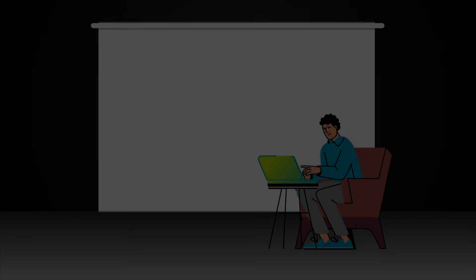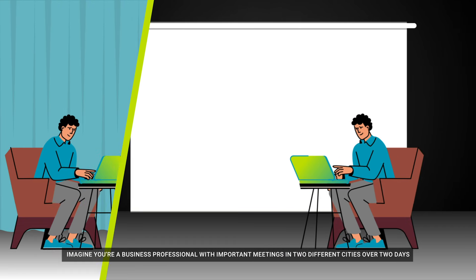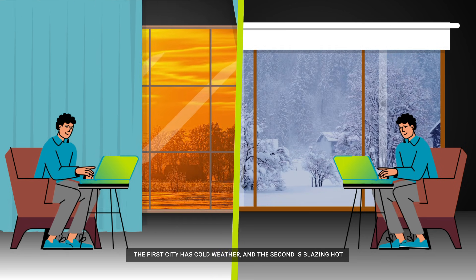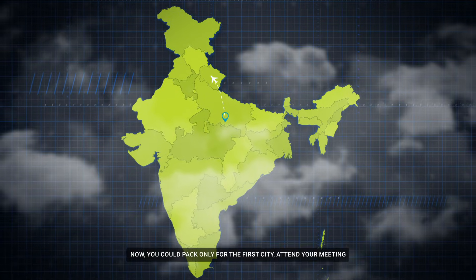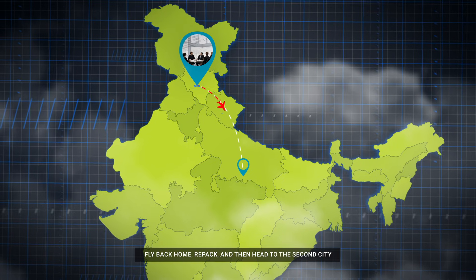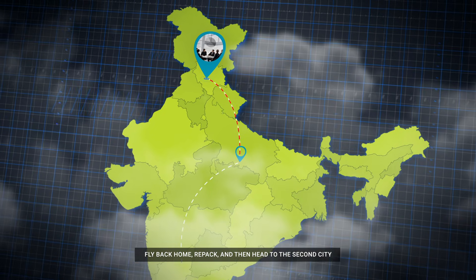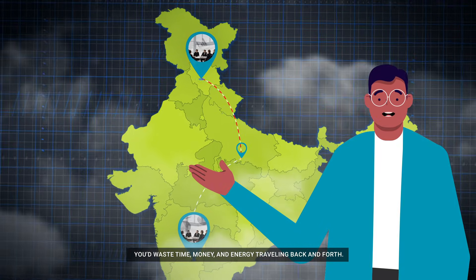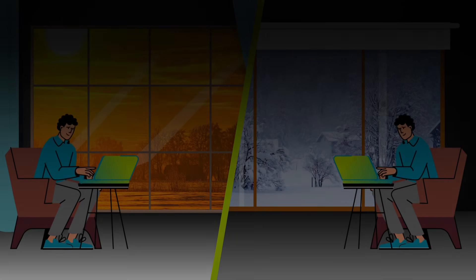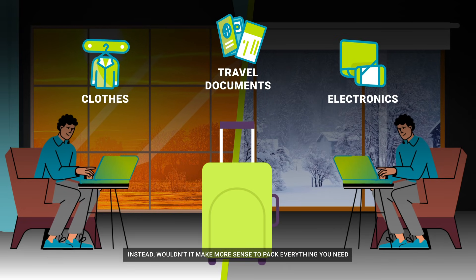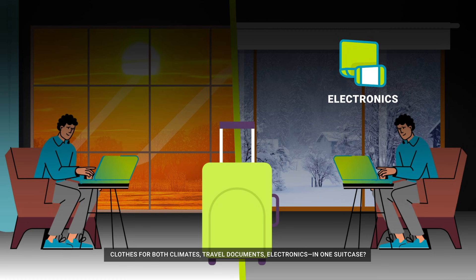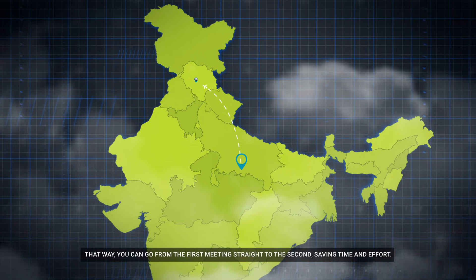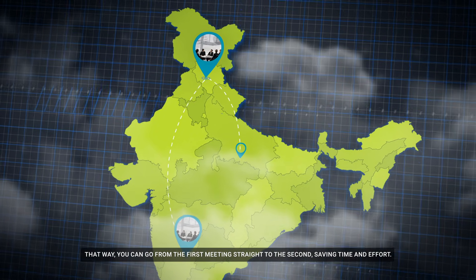Imagine you're a business professional with important meetings in two different cities over two days. The first city has cold weather and the second is blazing hot. Now you could pack only for the first city, attend your meeting, fly back home, repack, and then head to the second city. But that sounds exhausting — you'd waste time, money, and energy traveling back and forth. Instead, wouldn't it make more sense to pack everything you need — clothes for both climates, travel documents, electronics — in one suitcase? That way you can go from the first meeting straight to the second, saving time and effort.